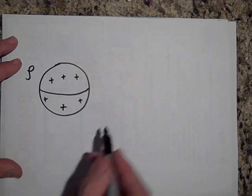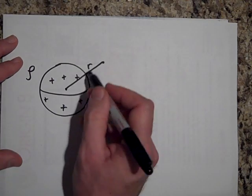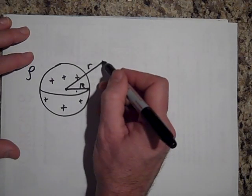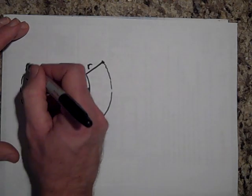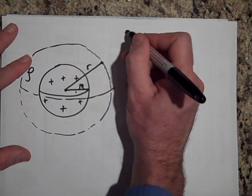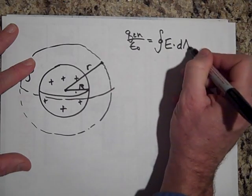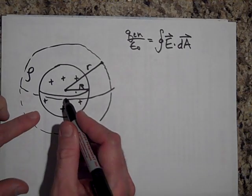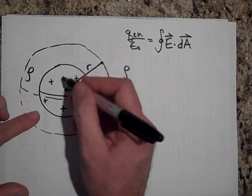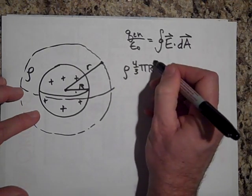Now let's find the field outside the sphere. We have the same sphere with charge density rho spread uniformly throughout, and we want the field at a distance lowercase r where r is greater than capital R. We draw a Gaussian surface — a sphere of radius little r — outside the charged sphere and apply Gauss's Law. The charge enclosed is now the entire charge of the sphere: rho times four-thirds pi big R cubed, all over epsilon-naught, because the charge stops at capital R.